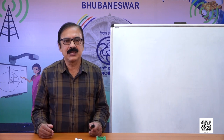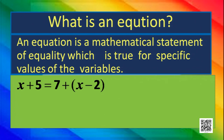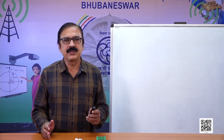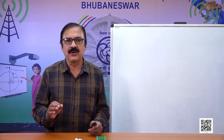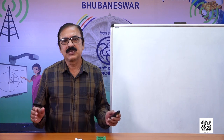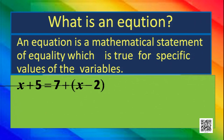Now let's see some other situations. Consider x plus 5 is equal to 7 plus x minus 2. If we put x equal to 1, the left hand side gives 6 and the right hand side also gives 6. If we put x equal to 0, the left hand side gives 5 and the right hand side also gives 5. That means this statement is true for both values of x, so we cannot say this to be an equation — this statement is not an equation.